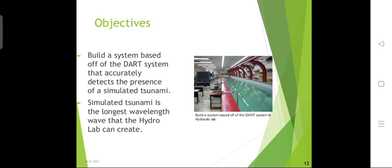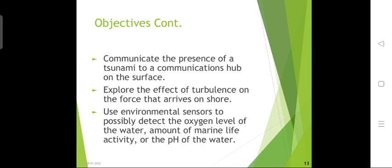Here are the objectives of the tsunami warning system. The goal is to build a system based on the DART system that accurately detects the presence of a simulated tsunami — meaning a prototype tsunami generated in the laboratory. The simulated tsunami is the longest wavelength wave that the hydro lab can create. The system is also built to communicate the presence of a tsunami to a communication hub on the surface, explore the effect of turbulence on waves arriving on shore, and use environmental sensors to detect oxygen levels, marine life activity, and the pH of water, which helps prevent harm to marine life.